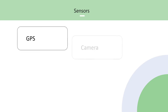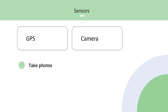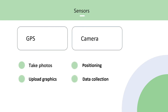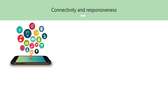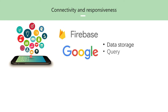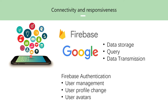The sensors used in this app include the camera and GPS location. We use the camera to allow users to take photos and upload graphics, and we use GPS to locate the user's position for exploring nearby posts. In addition, we have connected the gyroscope and accelerometer sensors to collect suggestions — when you shake your phone on the main page, a pop-up window will appear to collect suggestions from users. We use Firebase, powered by Google technology, to ensure data storage, query, and transmission, enhancing availability and reliability. Firebase's authentication function ensures the security of user accounts, and we also use Firestore to store post-related information.